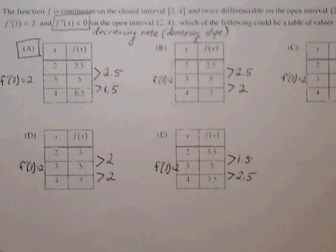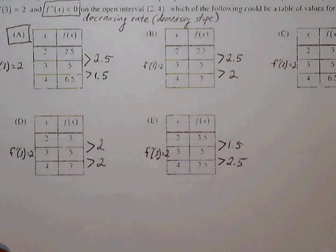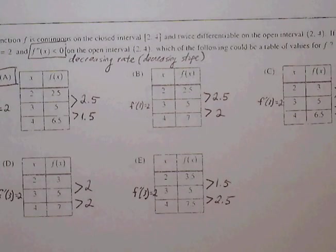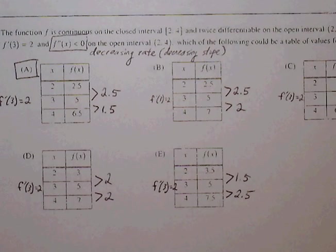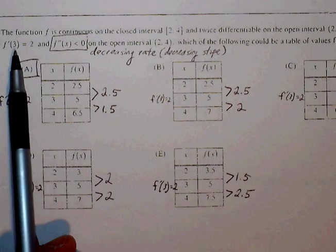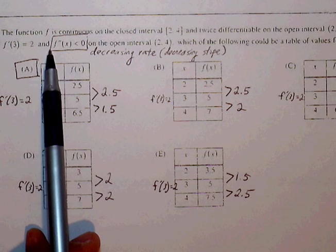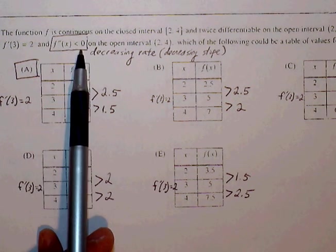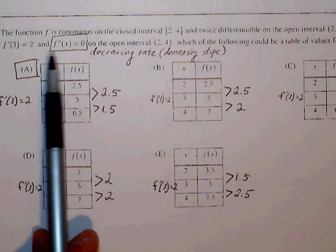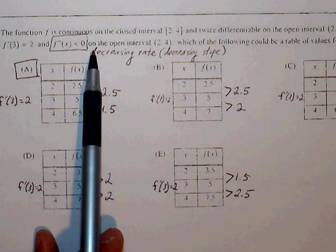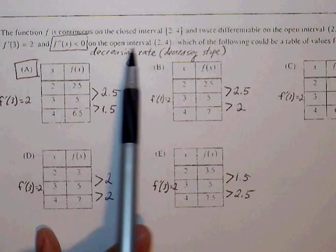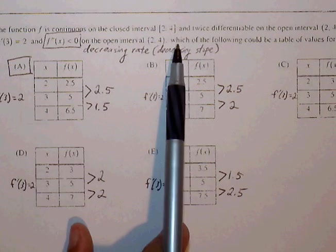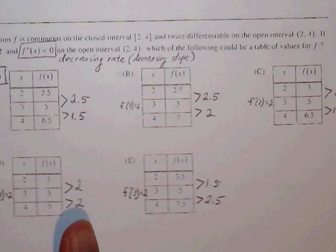Okay, number 90, the function f is continuous on the closed interval from 2 to 4 and twice differentiable on the open interval from 2 to 4. If f'(3) is equal to 2, so the slope at 3 is exactly 2, and we also know that f'' is less than 0. So what that means is that our slope is going to keep decreasing on the interval from 2 to 4. Which of the following could be a table of values for f?